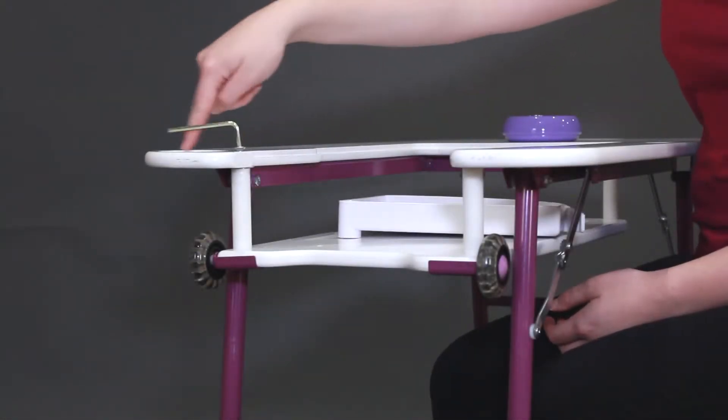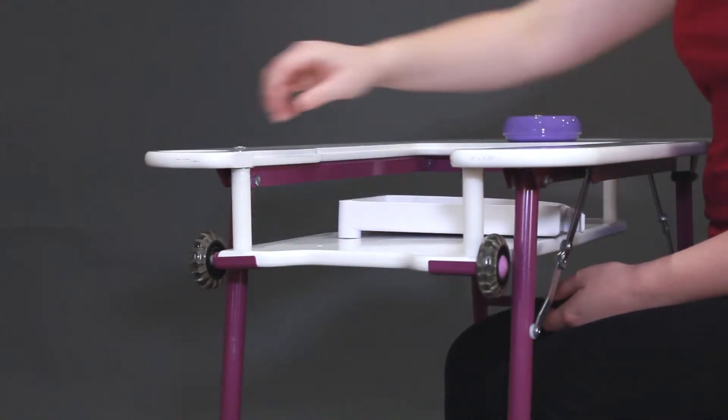Here is how you install the tray on your portable table. Unscrew the allen head from the top and bottom of the table.